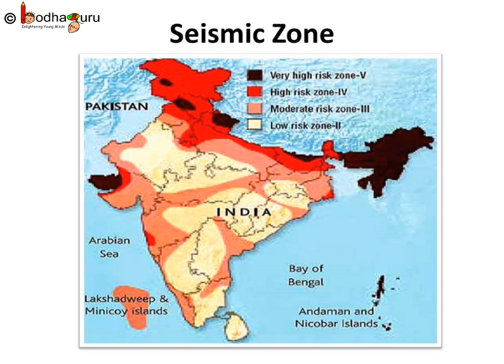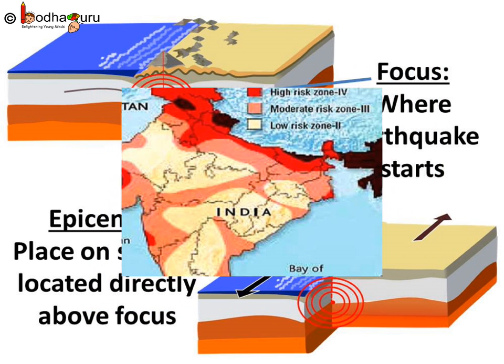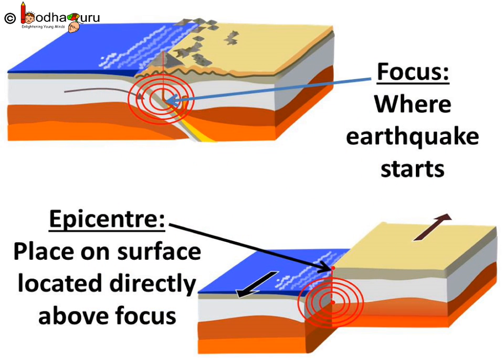In India, the areas most threatened are Kashmir, Western and Central Himalayas, the whole of the Northeast, Rann of Kutch, Rajasthan, and the Indo-Gangetic Plain. Some areas of South India also fall in the danger zone.